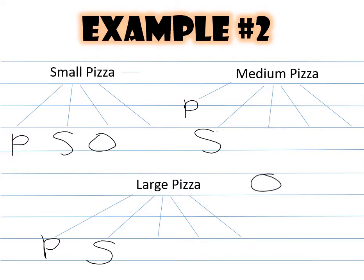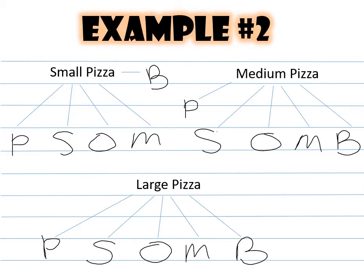How about onions on a small pizza? That makes seven. Medium pizza with onions is eight. And a large pizza with onions would be nine. A small pizza with mushrooms is 10. Eleven, a medium pizza with mushrooms. Twelve, a large pizza with mushrooms. Thirteen, a small pizza with black olives. A medium pizza with black olives would be 14. And a large pizza with black olives is 15.